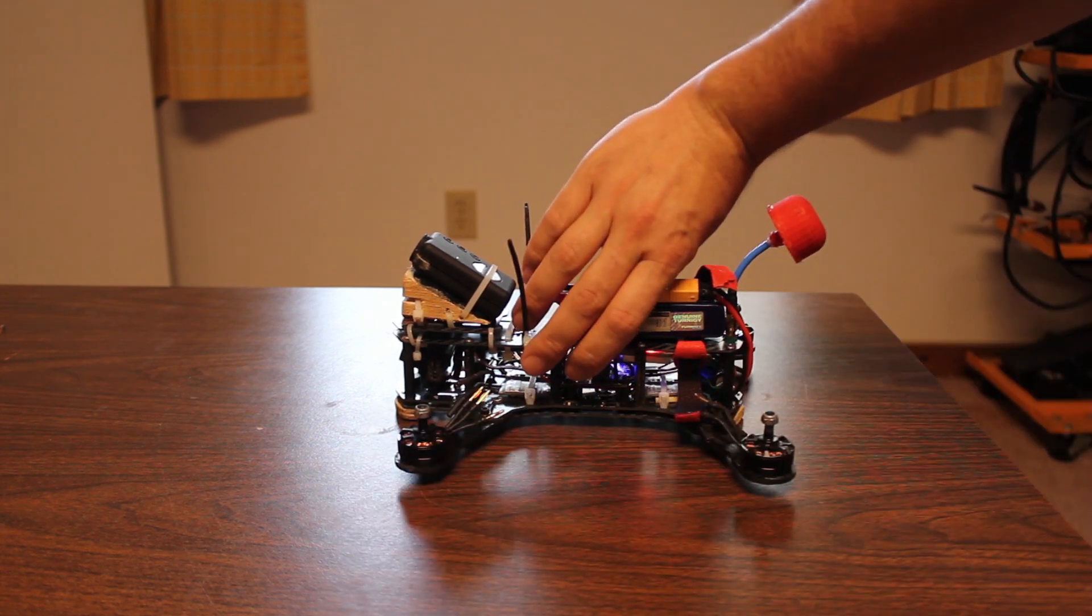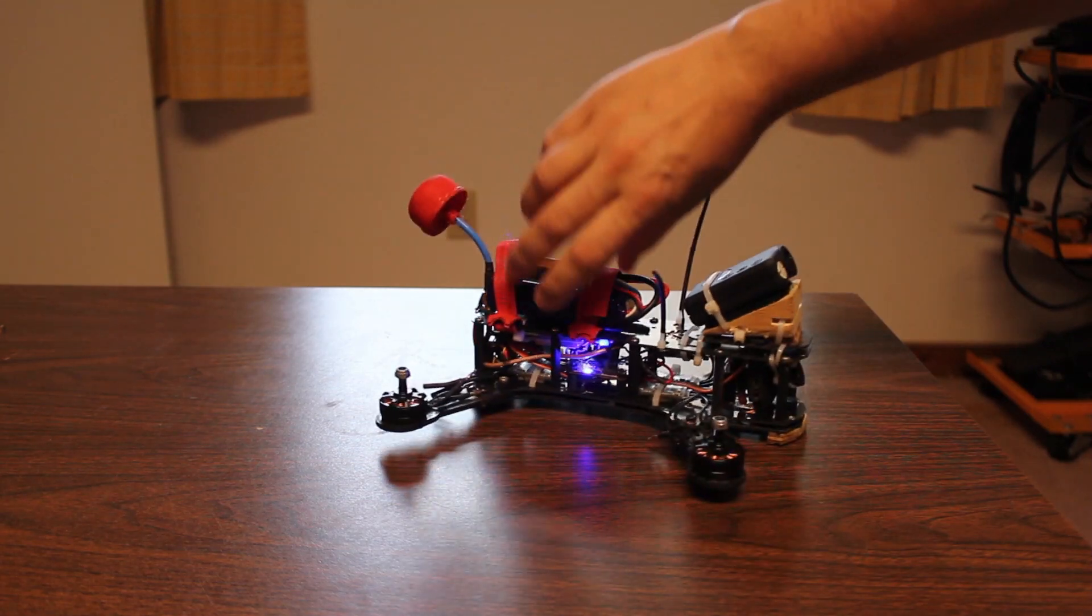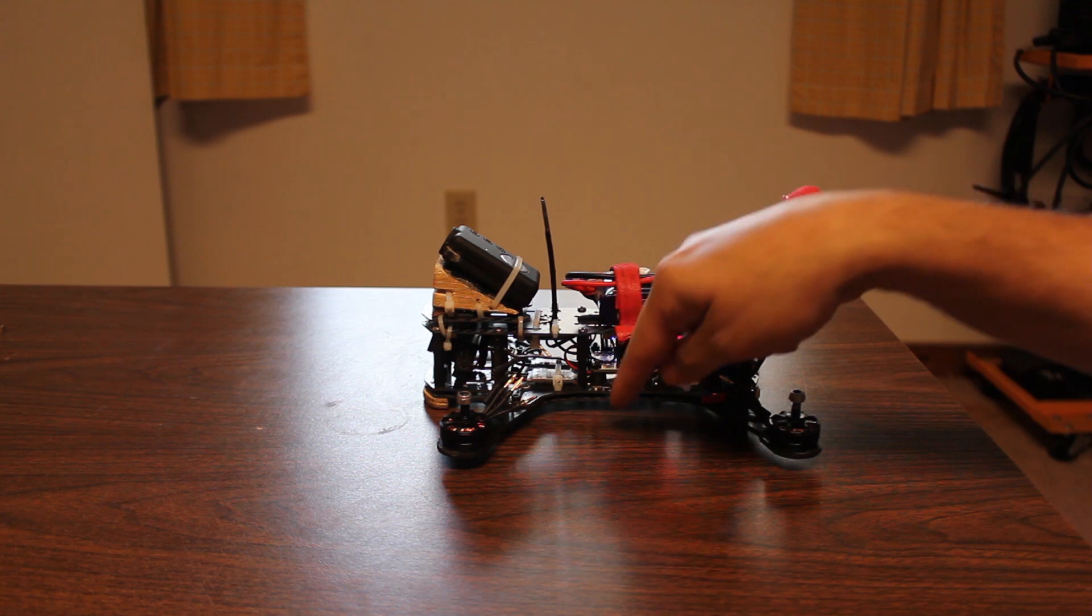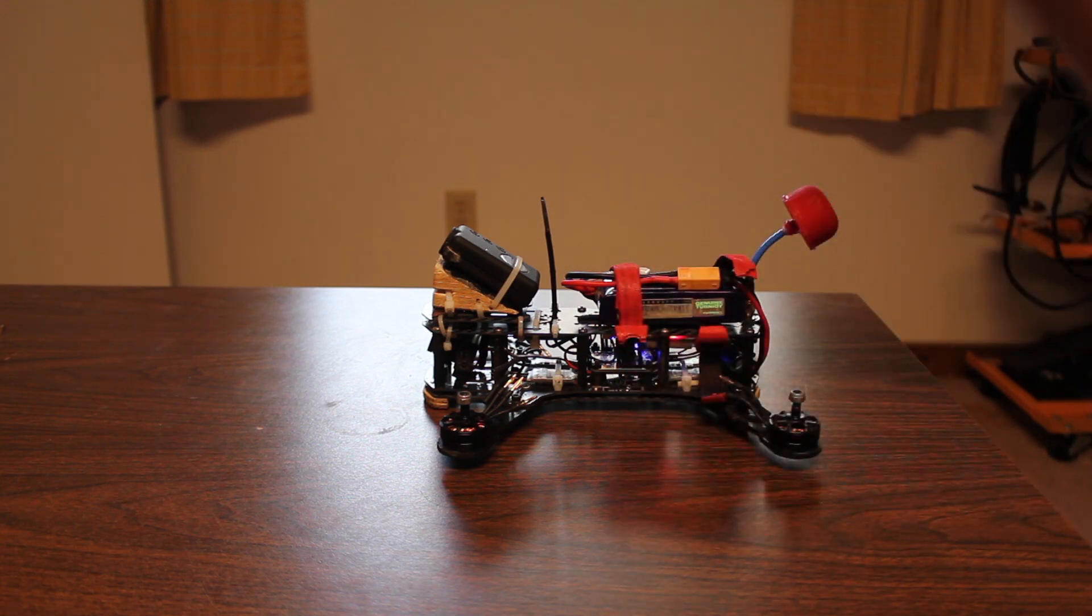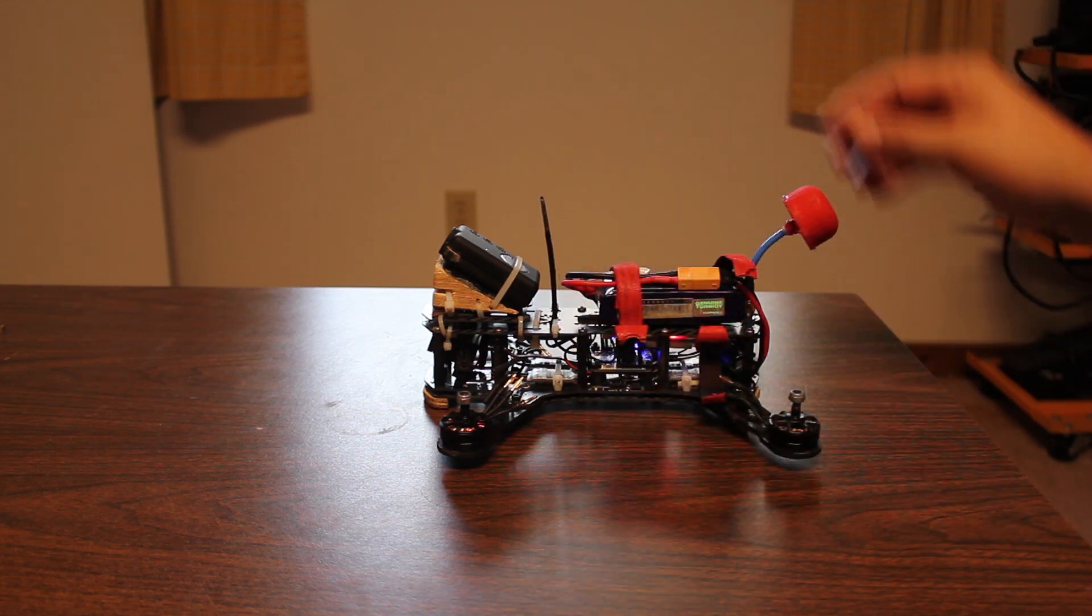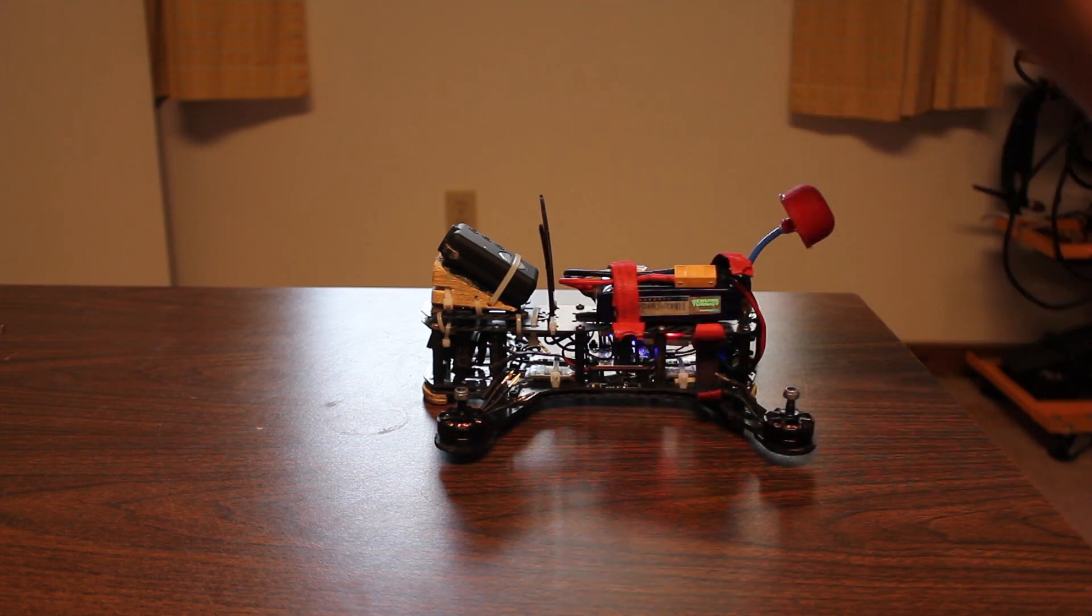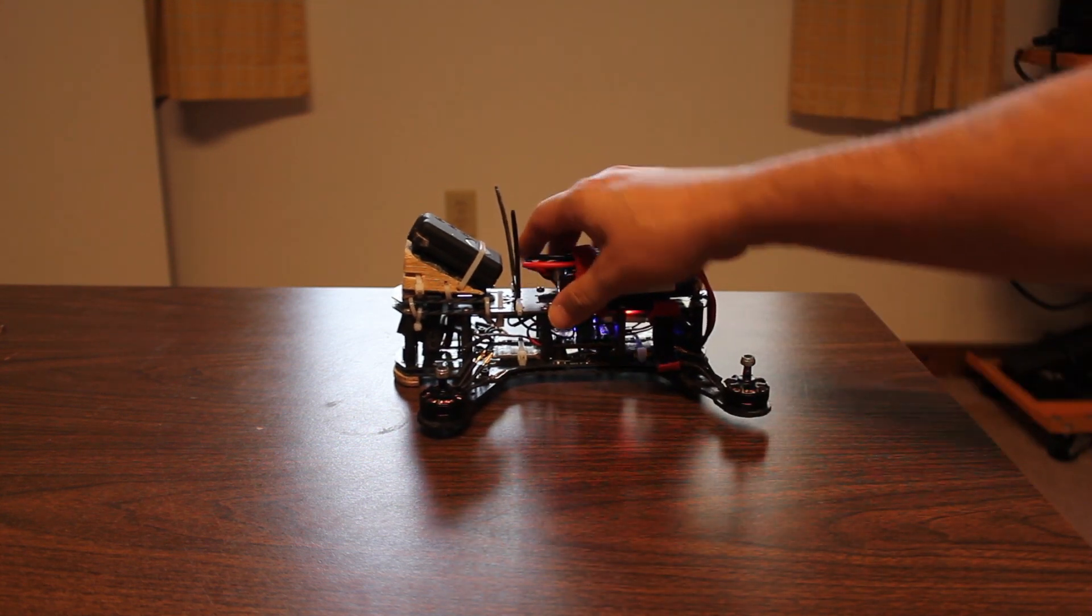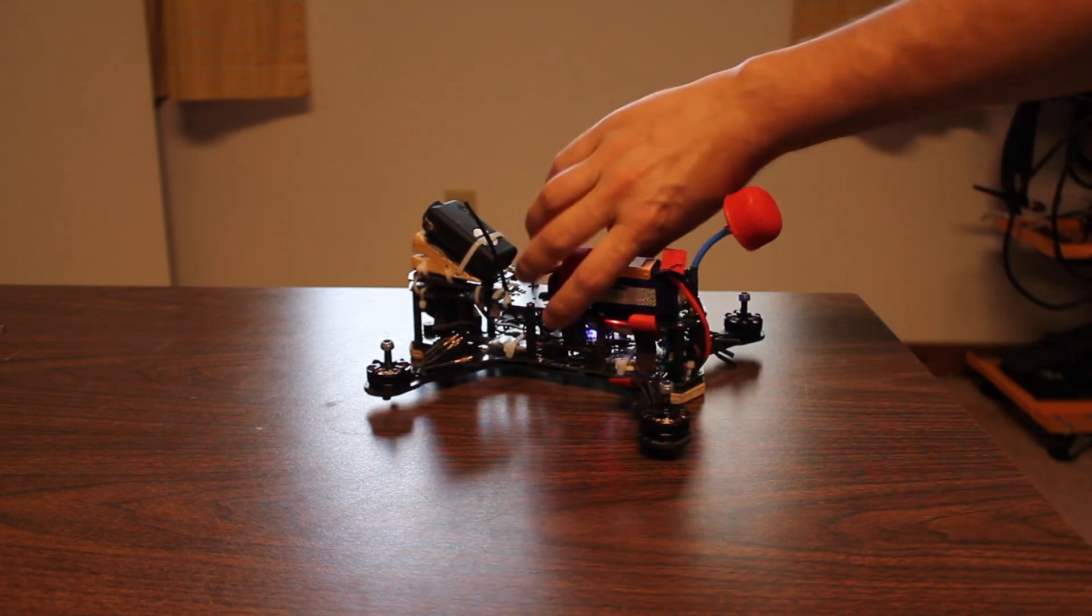Obviously when you yaw the multirotor it spins about this axis, so we can think about the z, x, and y axis relative to the copter's frame. When you yaw, it spins around the z axis, which if the copter is flat, that's not going to be very much to say there.